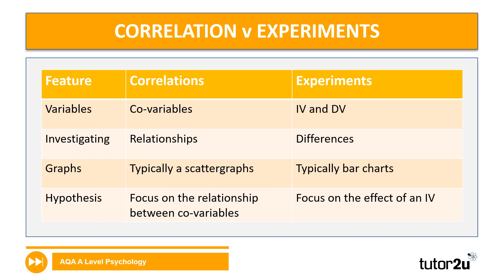In correlational research, the variables are referred to as co-variables; in experimental research, it's the IV and DV. In correlations, we're investigating relationships between co-variables, whereas in an experiment we're investigating differences. The graph used for correlational research is typically a scatter graph, whereas for experimental research you might see bar charts. The focus of the hypothesis in correlational research is the relationship between those co-variables — how they're correlated — whereas in experimental research we're looking for the effect of a change in an IV on a dependent variable.